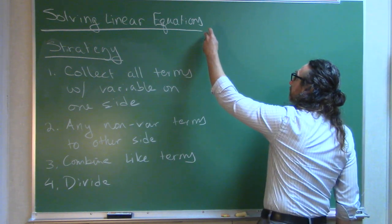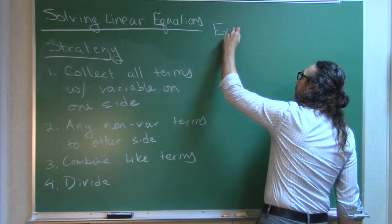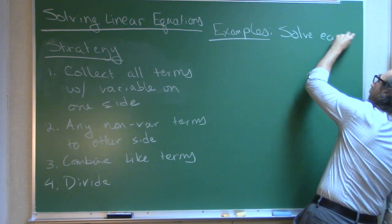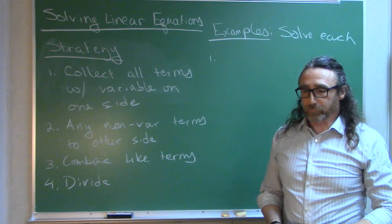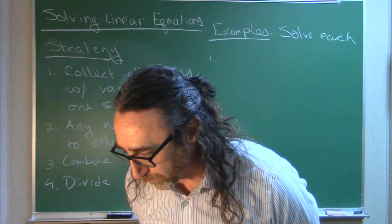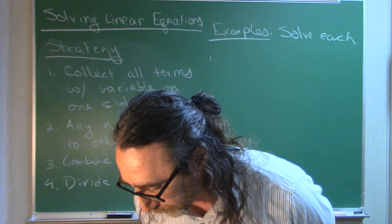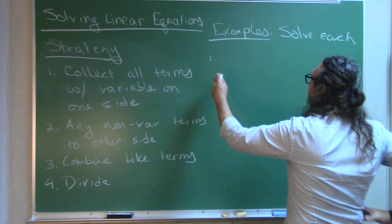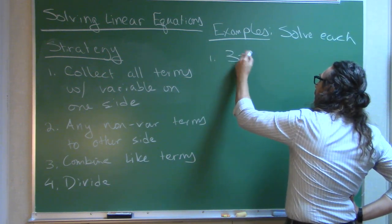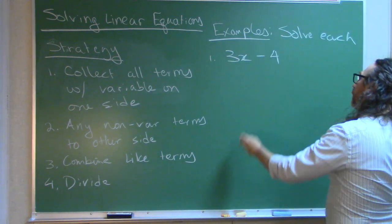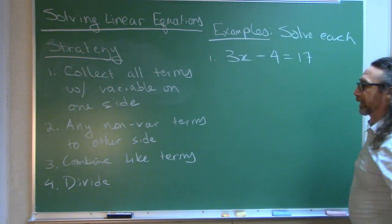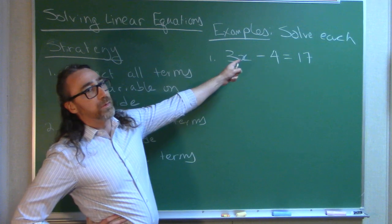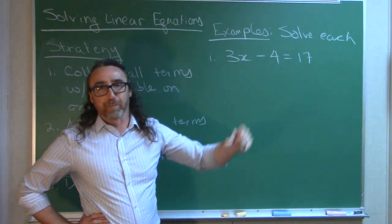A couple quick examples. Let's start out with something pretty straightforward. Let's go with 3x minus 4 equals 17. We're solving for x — in other words, we want to find the value of x that will make a true statement when we plug it in.